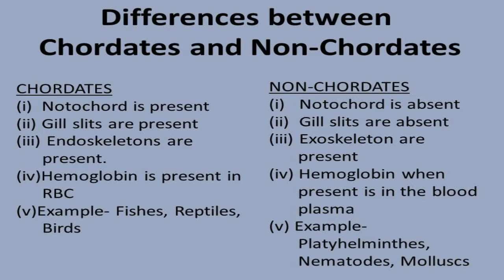You have seen cockroaches — the outer covering is the exoskeleton. Like the cockroach you see in the house — it has an exoskeleton but no notochord or vertebral column. When hemoglobin is present in non-chordates, it is found in blood plasma, not in RBCs as in chordates.